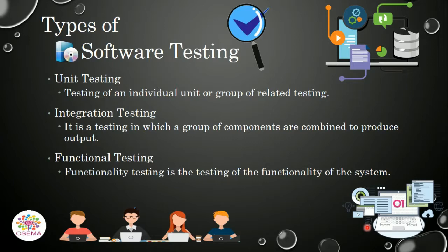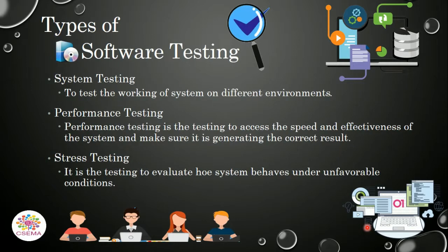The third type is functional testing, which is about testing the functionality of the system — what kind of functions it performs and whether those functions work correctly. System testing is the testing of a software system on different kinds of environments, like different operating systems such as Windows, Linux, Unix, or Mac. It is the whole software system testing performed on different environments and platforms.